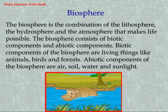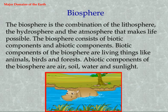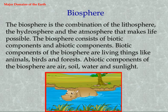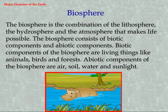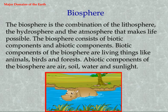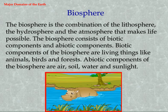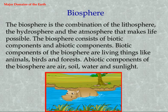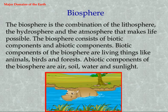Biosphere. The combination of the lithosphere, the hydrosphere, and the atmosphere that makes life possible is called the biosphere. The biosphere consists of biotic components and abiotic components. Biotic components of the biosphere are living things like animals, birds, and forests. Abiotic components of the biosphere are air, soil, water, and sunlight.